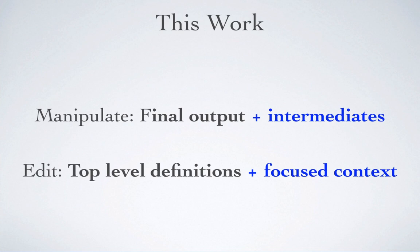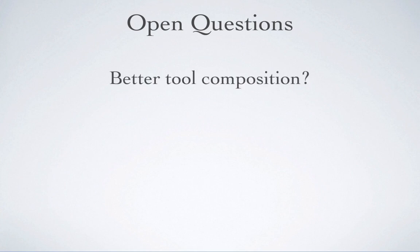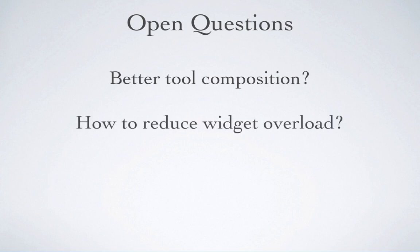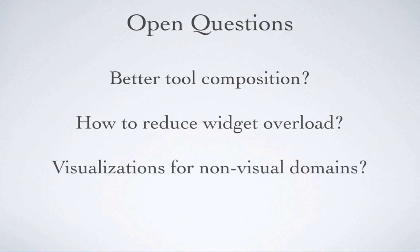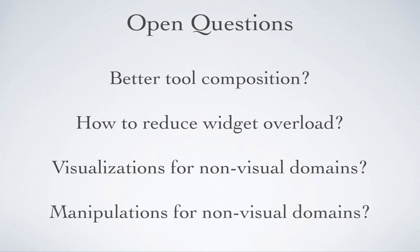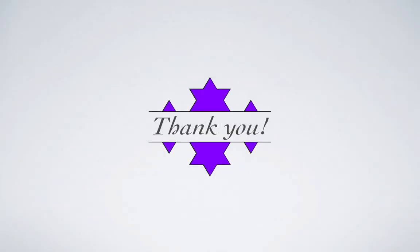To recap, we've seen how the point widgets and list widgets allow us to manipulate intermediates within our program, as well as how we're able to focus on different function calls to limit our editing scope. There are still some open questions: some tools were constructed just for the happy path through this demo and need to work in a greater variety of situations; the many widgets displayed need better noise reduction; and this work focused on vector graphics, so there's an open question of how to visualize and manipulate more general non-visual domains. I hope this work sparked some ideas on ways direct manipulation could be added to programming.